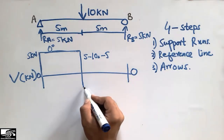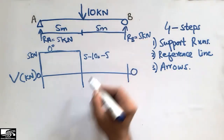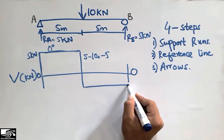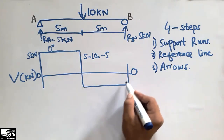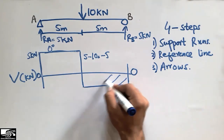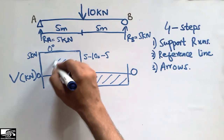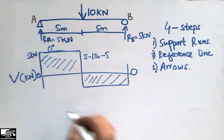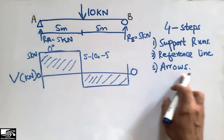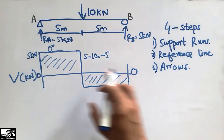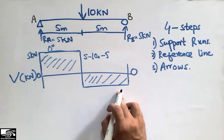Again there is no load on the beam from the center to support B, so the arrow moves straight across. This gives 5 kilonewton on the left half and minus 5 kilonewton on the right half. This is how we draw the arrows for the shear force diagram.